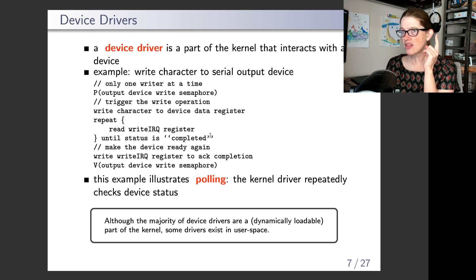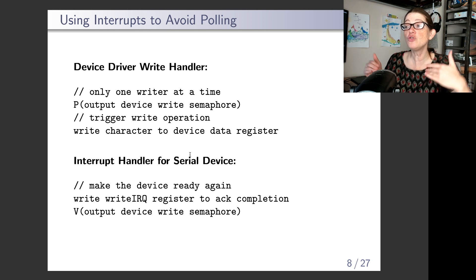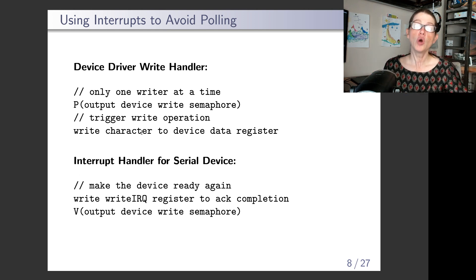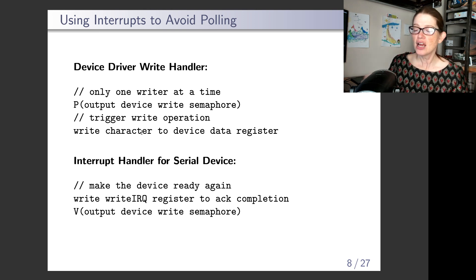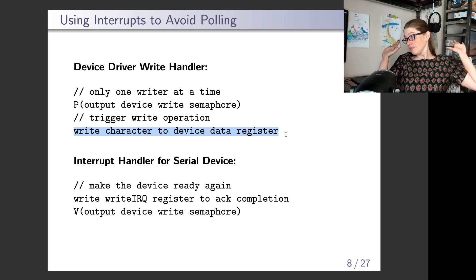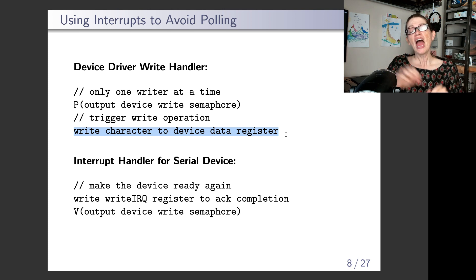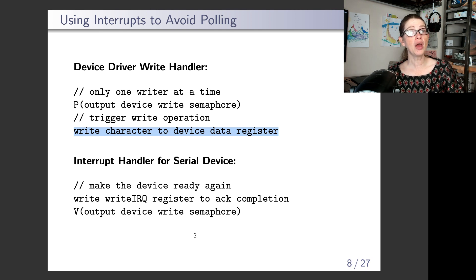We can simplify this particular driver by taking advantage of the fact that the device fires an interrupt when it's done. So we split it into two parts: the device driver write handler, which initiates communication with the device — it P's the semaphore to make sure we are the only one writing and then writes characters to the data and command register. Then the second part is the interrupt handler, which only runs when the device has fired an interrupt.